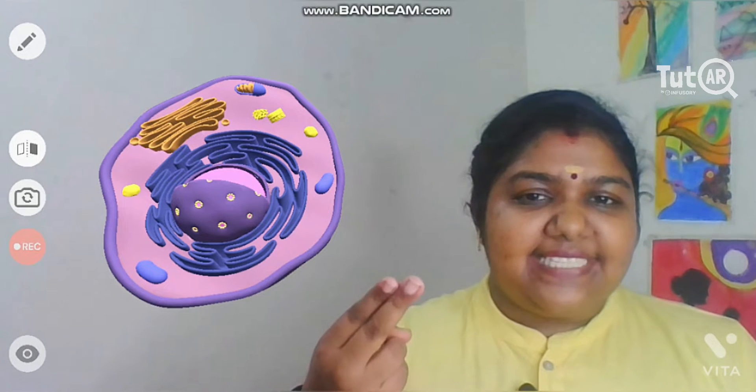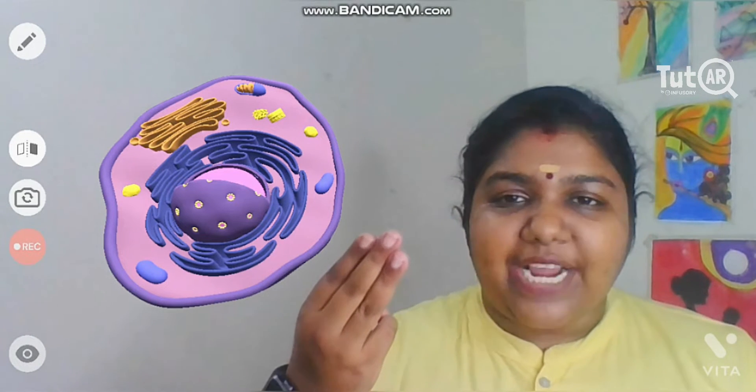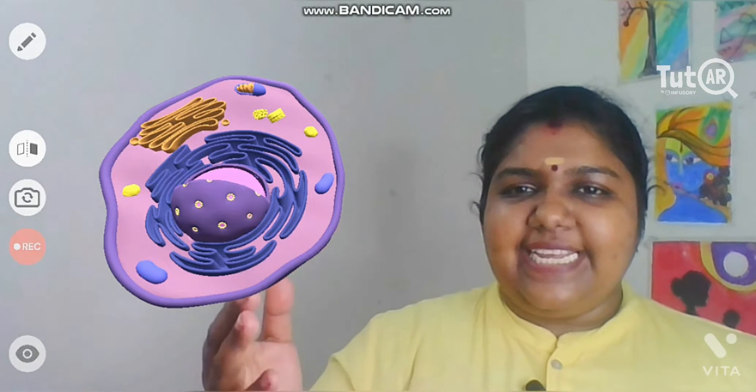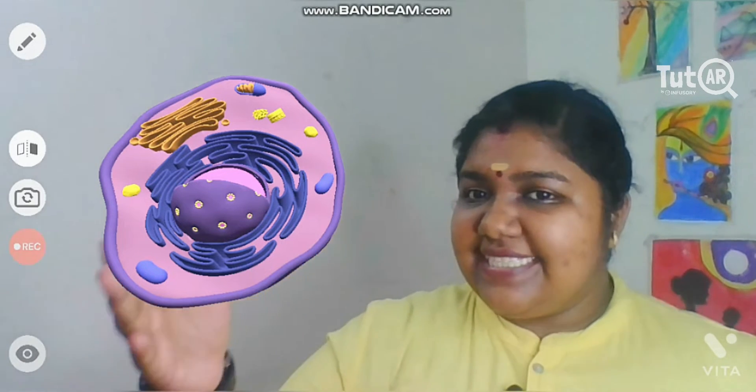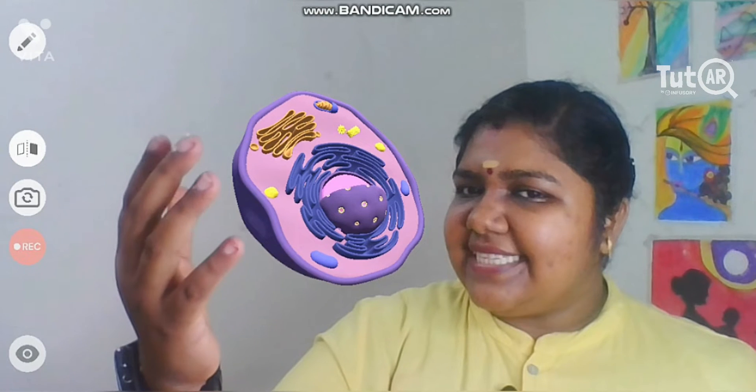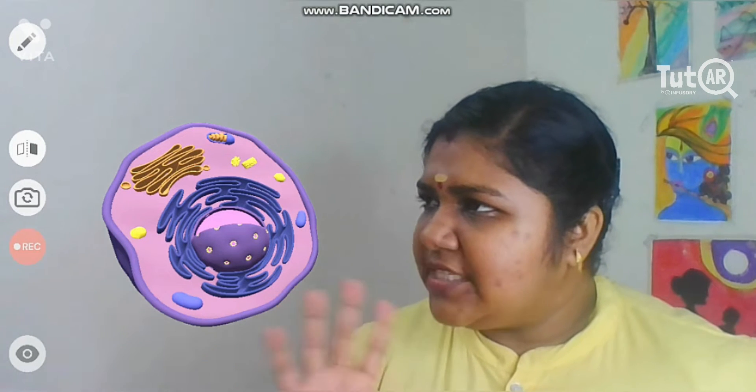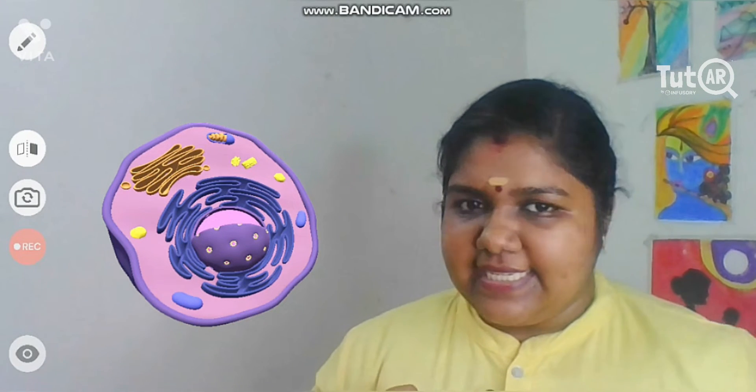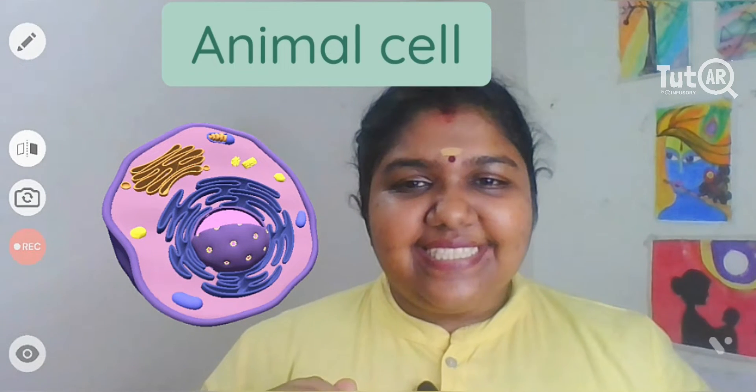Let us see if we can identify these organelles in this cell. Turning it around, I can observe various organelles, but there is no defined cell wall, there is no centrally placed vacuole, and I cannot see any chloroplast present in it.